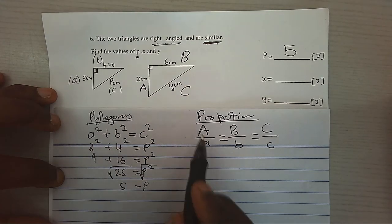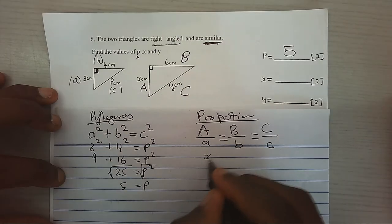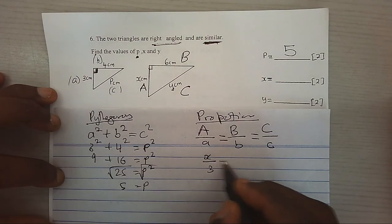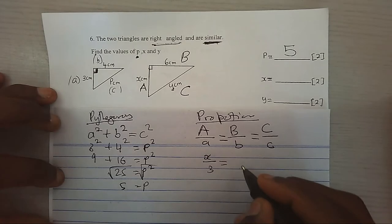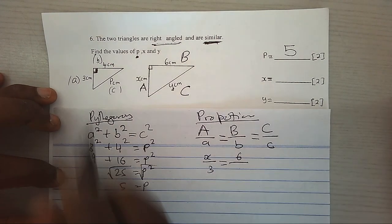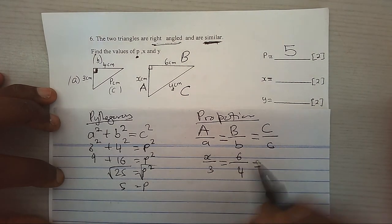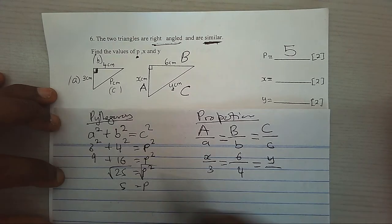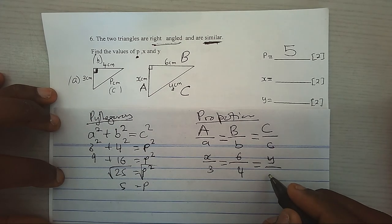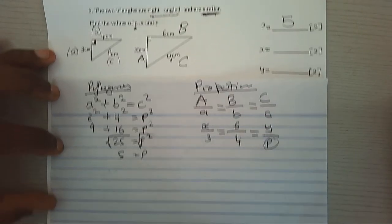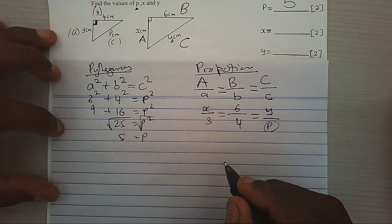If our big A is X, and our small A is 3, then actually, our big B will be 6. And our small B will be 4. And finally, our big C is Y, and our small C is P. But we already know the value of P. We shall replace the value of P.